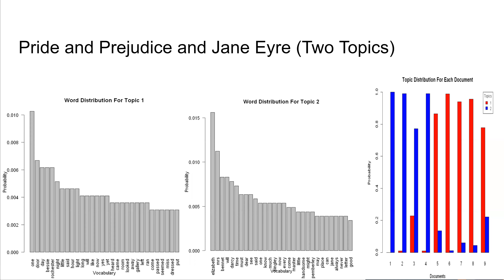We now build our first corpus of literary texts. The corpus contains excerpts from Pride and Prejudice and Jane Eyre — two books written in the 1800s by female British authors. I present the results of a run of LDA with Gibbs sampling with two topics. In this run, LDA identified each book as its own topic, with the first topic corresponding to Jane Eyre and the second topic corresponding to Pride and Prejudice. This example shows how LDA was able to clearly differentiate the two books.